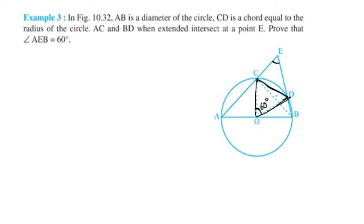The center angle COD subtends the arc CD. There is another remaining part — the subtended angle at point E, and the inscribed angle CBD.